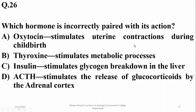Which hormone is incorrectly paired with its function? Oxytocin is correctly paired with stimulation of uterine contraction. Thyroxine stimulates metabolic processes. ACTH stimulates release of glucocorticoids by the adrenal cortex. But insulin does not stimulate glycogen breakdown — instead, it promotes the formation of glycogen. So C is the right option.